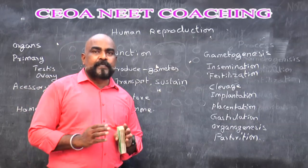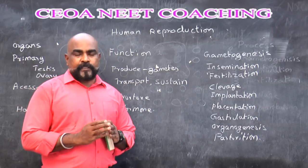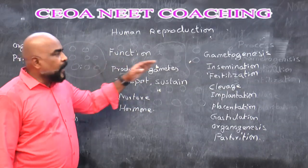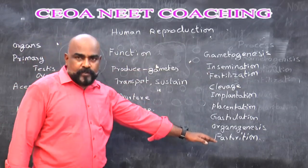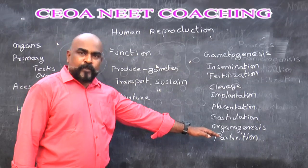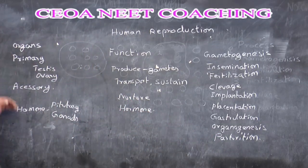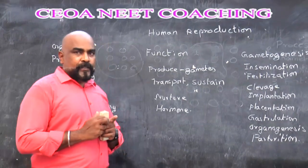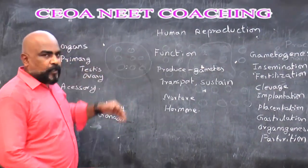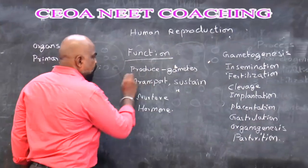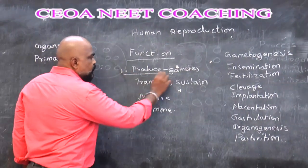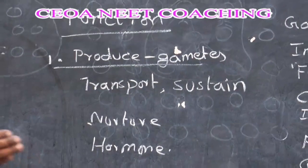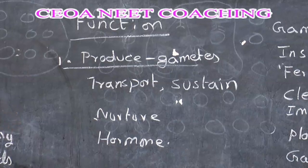First let's see the functions of human reproduction. The first function is to produce gametes. So the reproductive organs will produce gametes like sperm and ovum.